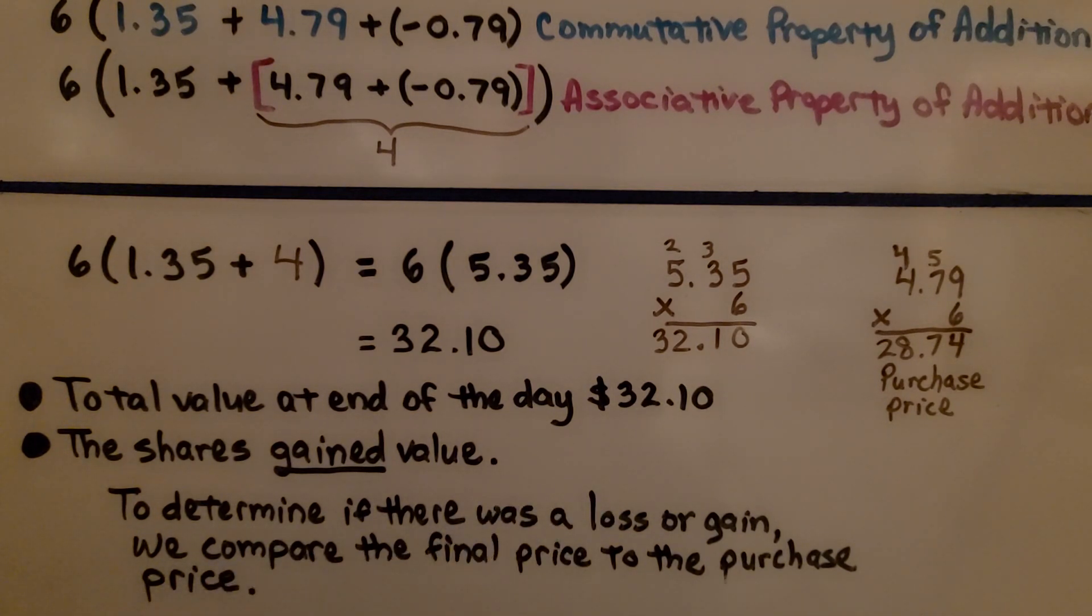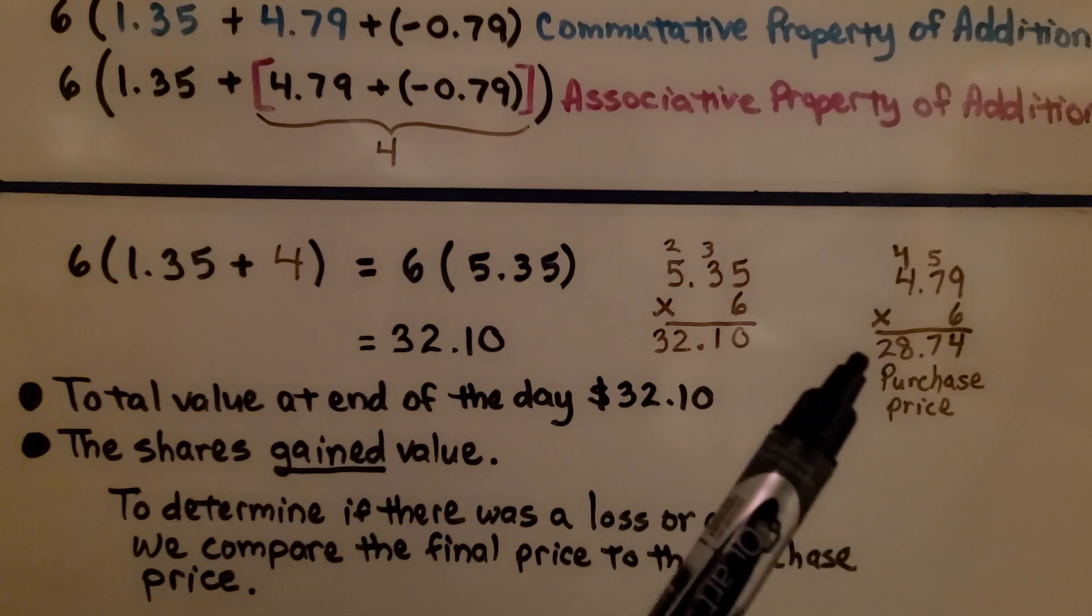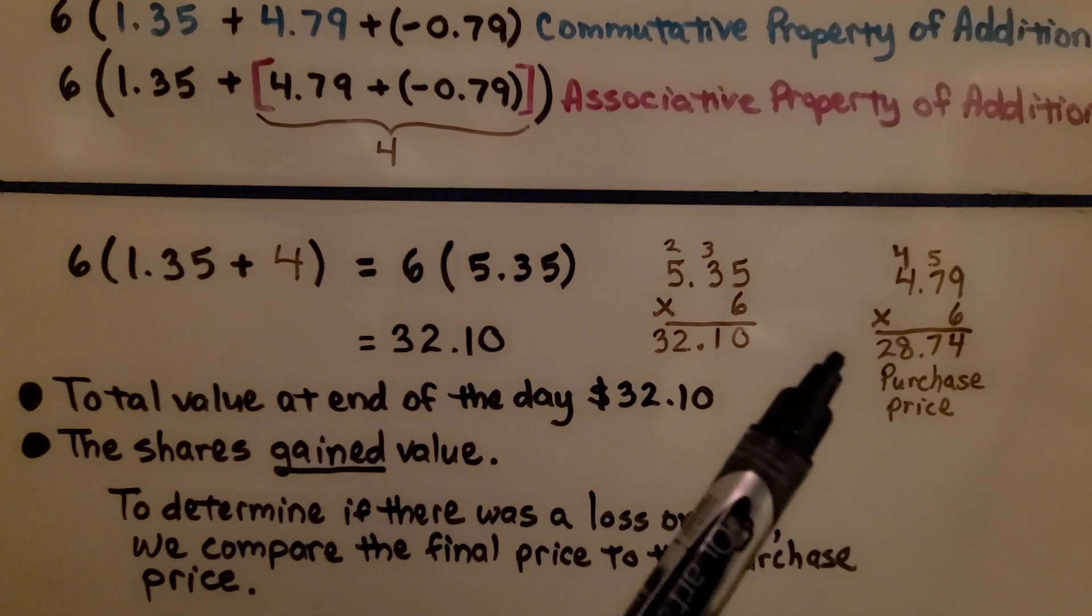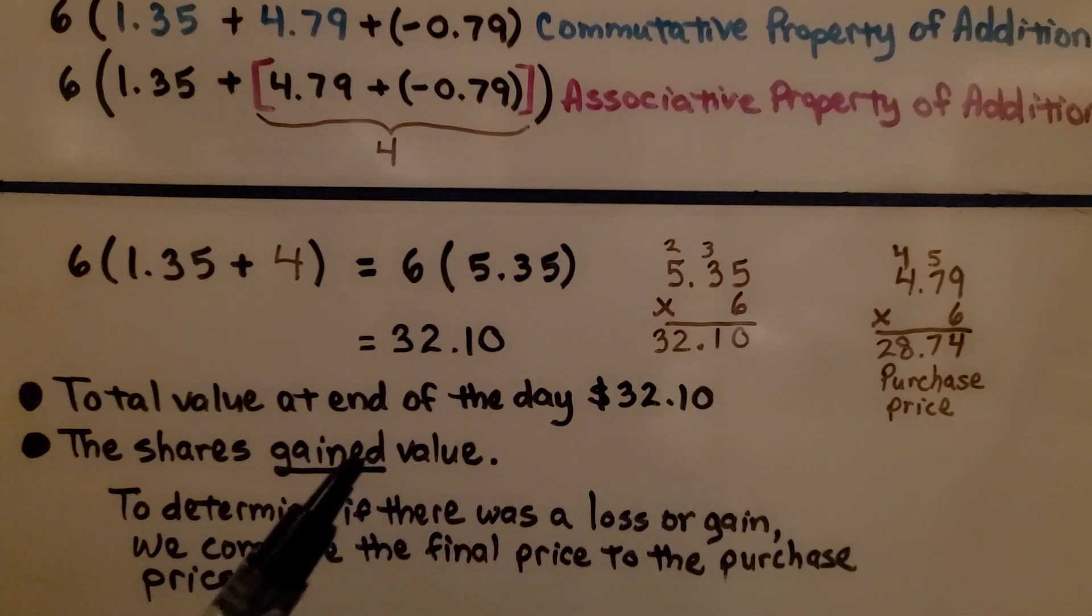So, the shares gained value. To determine if there was a loss or gain, we compare the final price to the purchase price. She originally paid $4.79 for 6 of them. We multiply and we know her purchase price was $28.74. Now, it's worth $32.10. That's gained value.